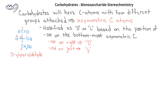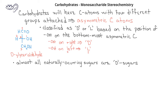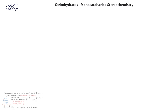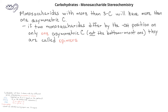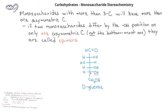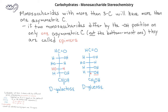Almost all sugars found in nature are D sugars. With larger monosaccharides, there will be more than one asymmetric center. When the hydroxyl groups on these asymmetric centers are on different sides, we can have what are known as epimers. Epimers are diastereomers that differ at only one asymmetric carbon. For example, we have already seen the structure of D-glucose. If we switch the hydroxyl group on the fourth carbon, we would end up with D-galactose, which is known as the C4 epimer of glucose.